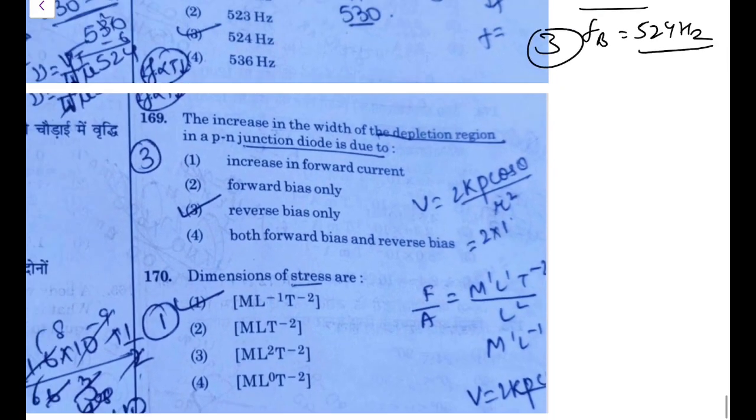The increase in width of the depletion region in a P-N junction diode: the increase in width happens if we know in the forward bias it is a decrease, while in the reverse bias it is increased. Increase in forward current? No. Forward bias only? Reverse bias only.